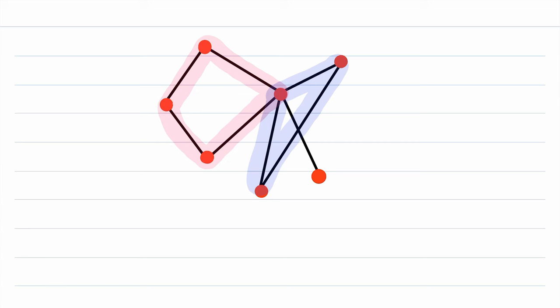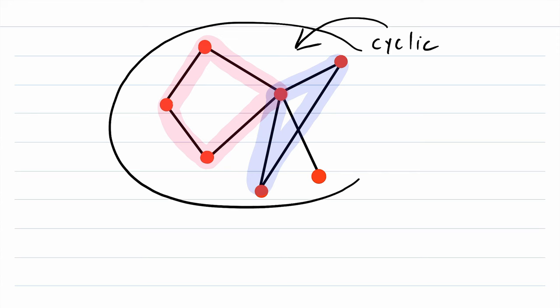Usually, if a graph has at least one cycle subgraph, we call the graph cyclic. So this is a cyclic graph. Whereas this graph here, a path graph on two vertices, this does not have any cycle subgraphs. We usually call a graph like that acyclic.